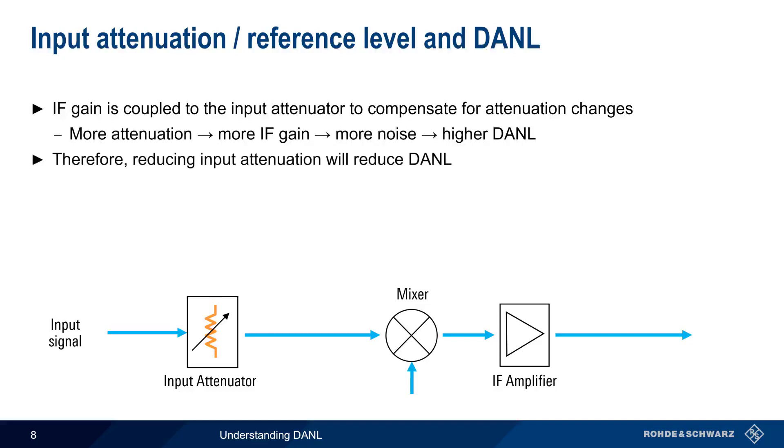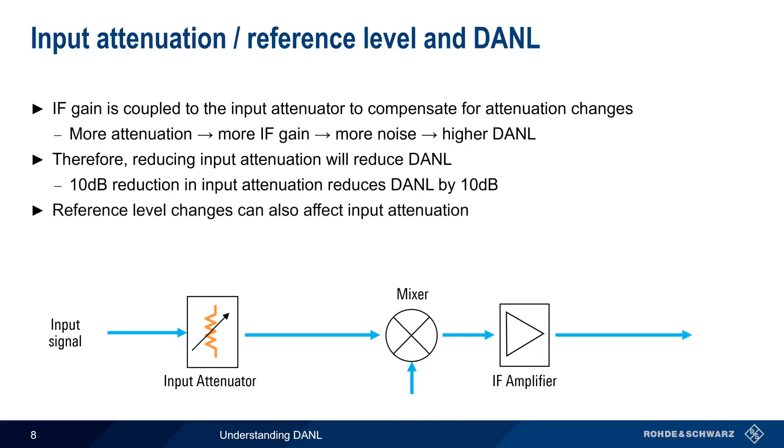Reducing input attenuation will therefore also reduce DANL. This is usually a one-to-one relationship. For example, reducing input attenuation by 10 dB will typically reduce DANL by 10 dB. Although it's possible to set input attenuation manually, this is often automatically adjusted when reference level is changed. Even in cases where changing the reference level does not change input attenuation, DANL may change by up to several dB as reference level is changed.